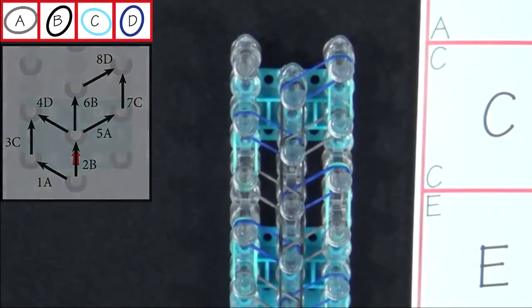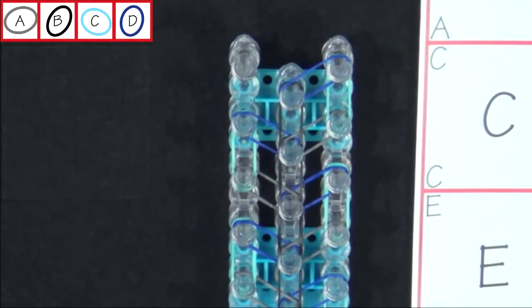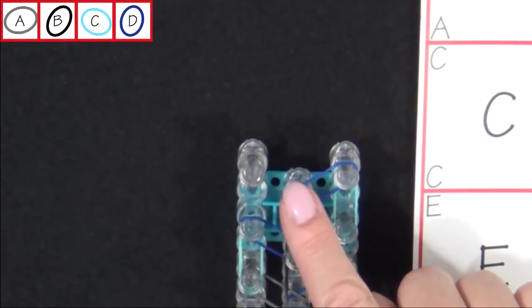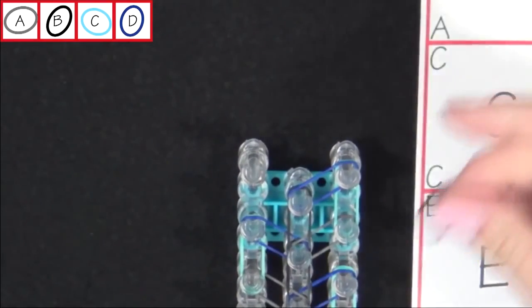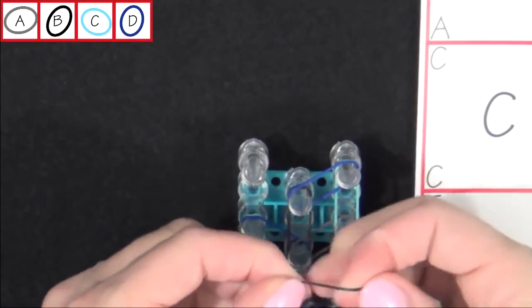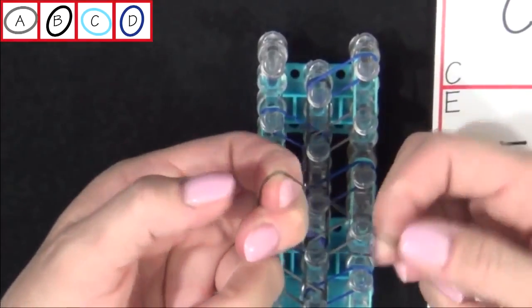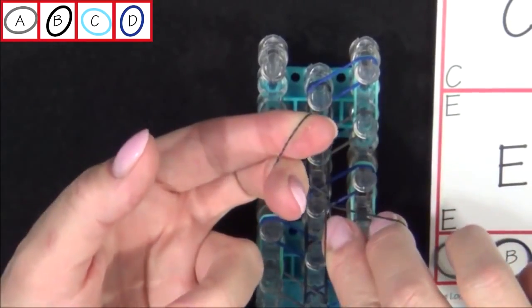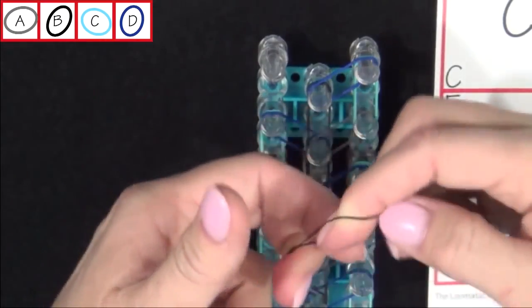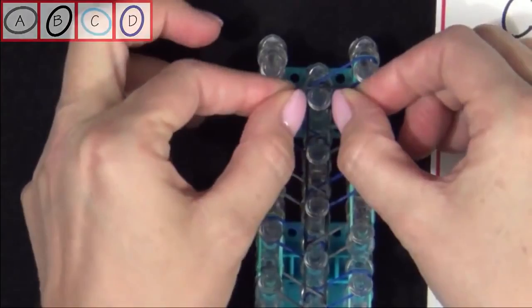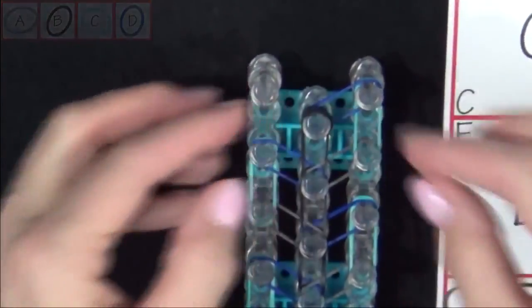And there we finished placing all the bands on the loom. Before we continue, we'll need to place a cap band on this last pin. Grab an A colored band, put two fingers through each side, twist it into a figure eight, turn it back upon itself, and place it on the last pin.